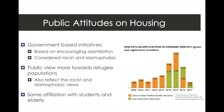These government-based initiatives are encouraging assimilation. However, they have been internationally considered racist and Islamophobic. The public view in Denmark towards refugee populations has also reflected these racist and Islamophobic views based on international critique. There has been some affiliation of social housing in Denmark with students and elderly populations. However, it should be noted that the percentage of people living in Denmark as asylum seekers has significantly gone down since 2015 after some of these rules came in, and the One Denmark proposal occurred in 2017, which is also when there was a drastic decrease in applications for housing and application for citizen status in Denmark.